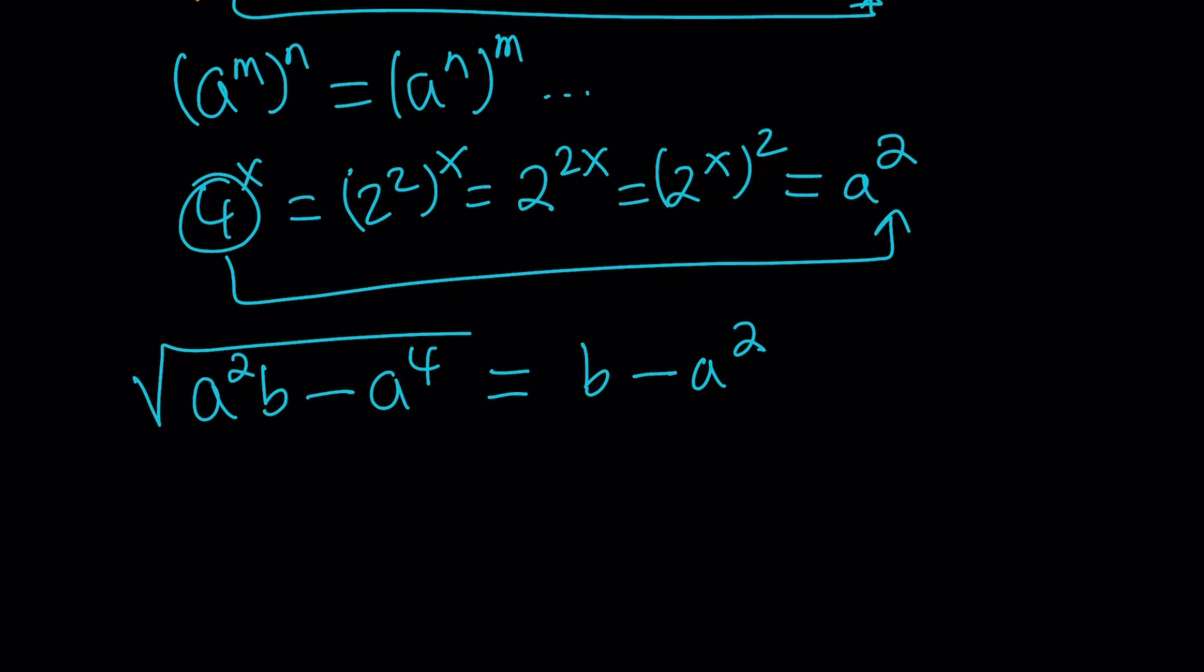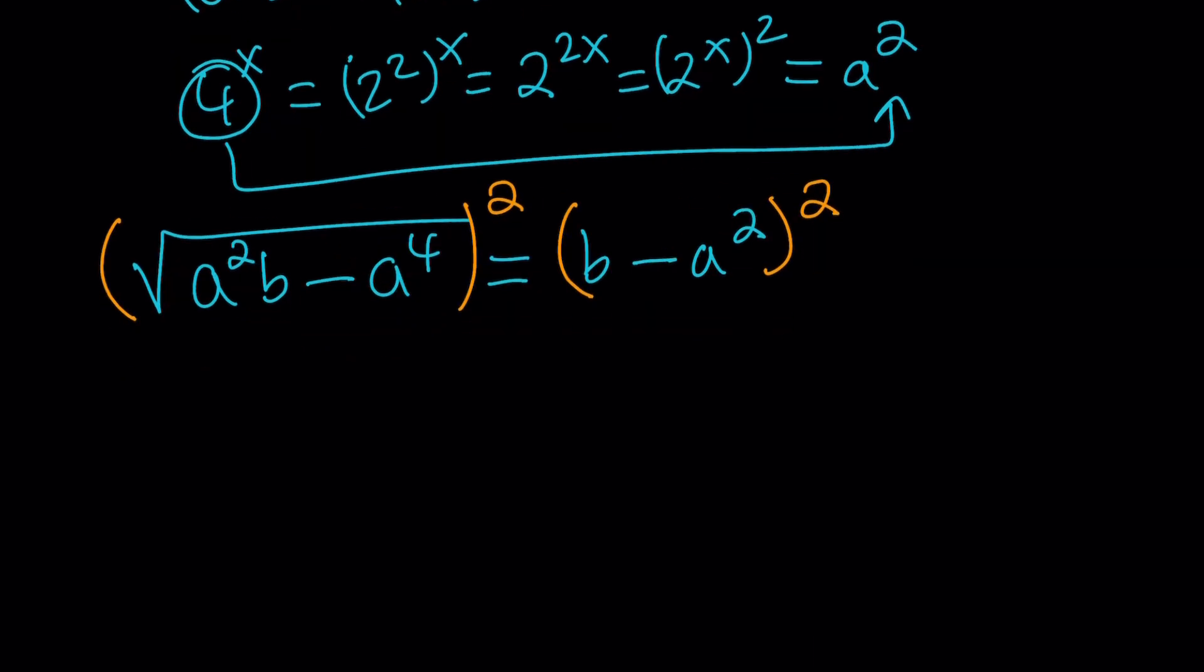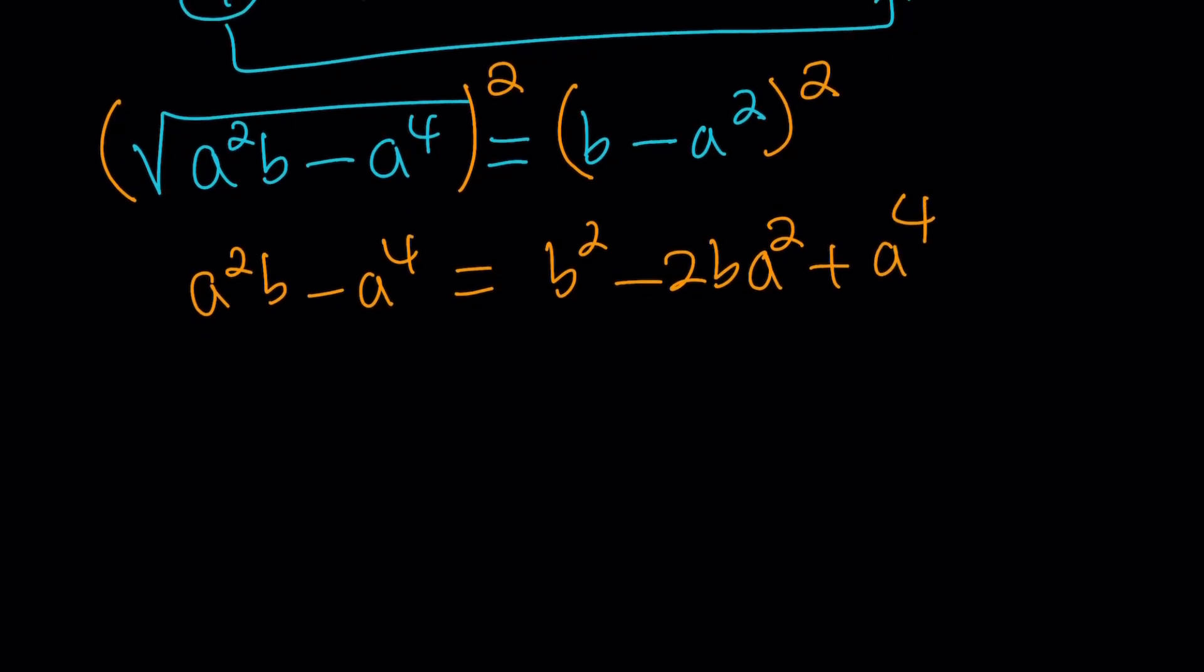So we're going to square both sides to get rid of the radical. Square both sides. And then this is going to give us a squared b minus a to the 4th equals b squared minus 2ba squared plus a to the 4th. Nothing cancels out, but let's put everything on the same side.